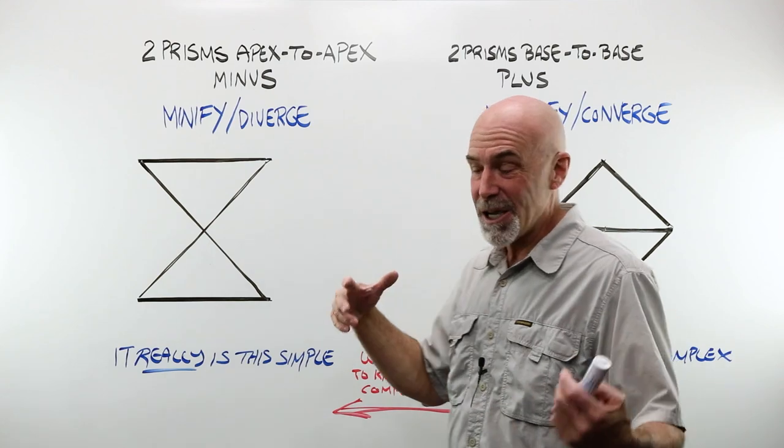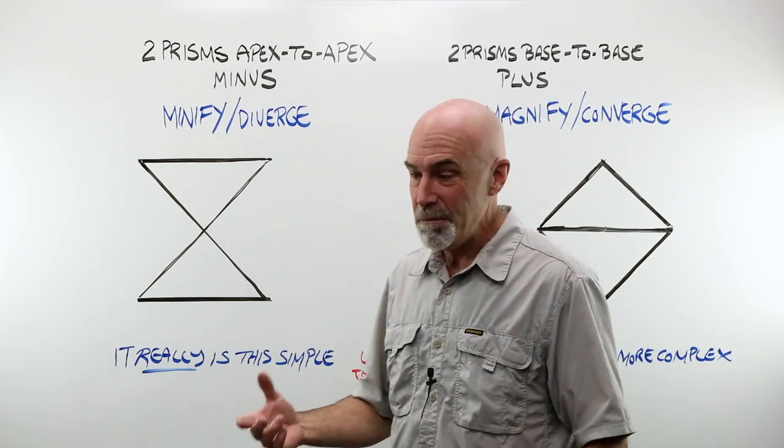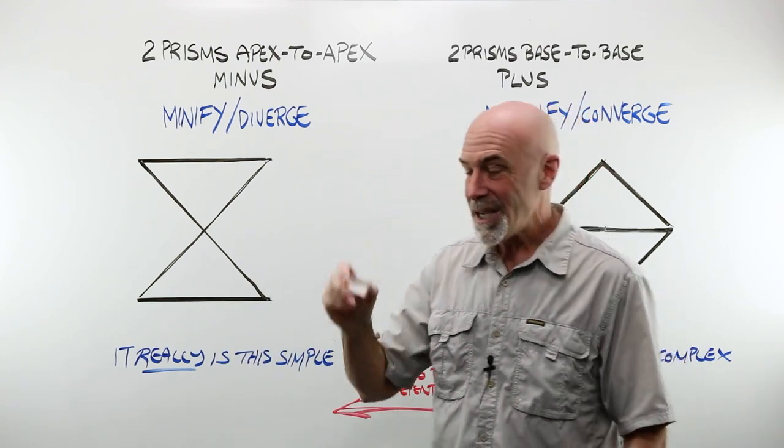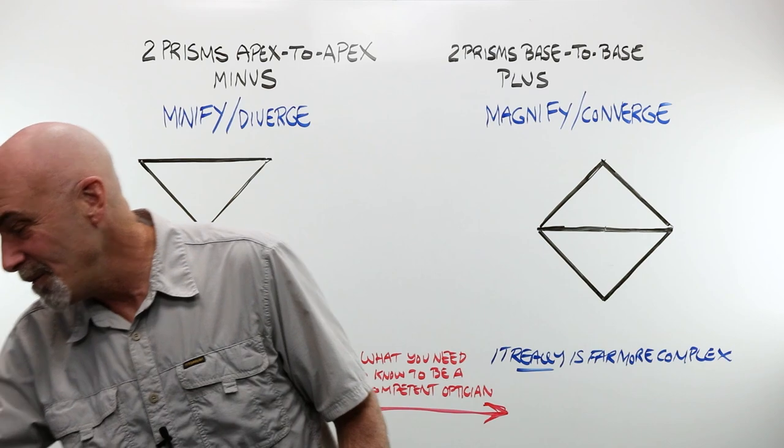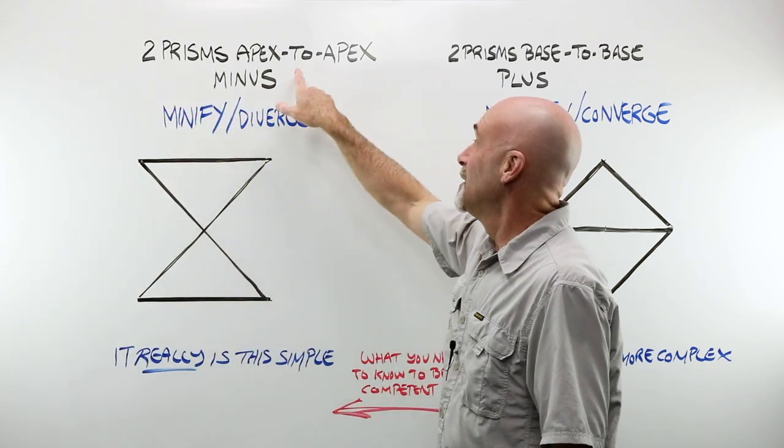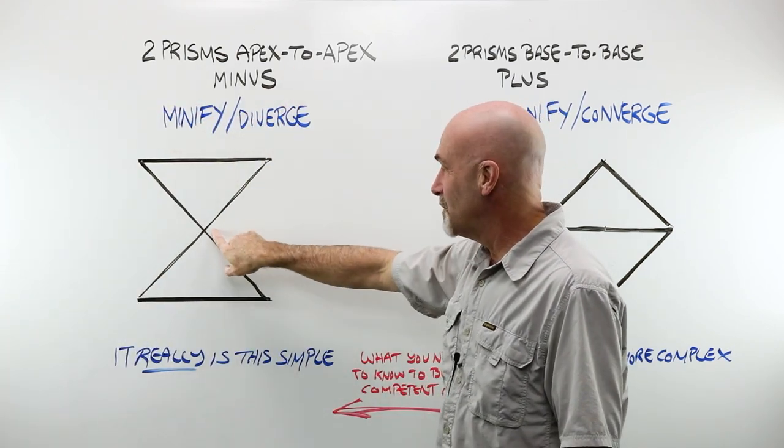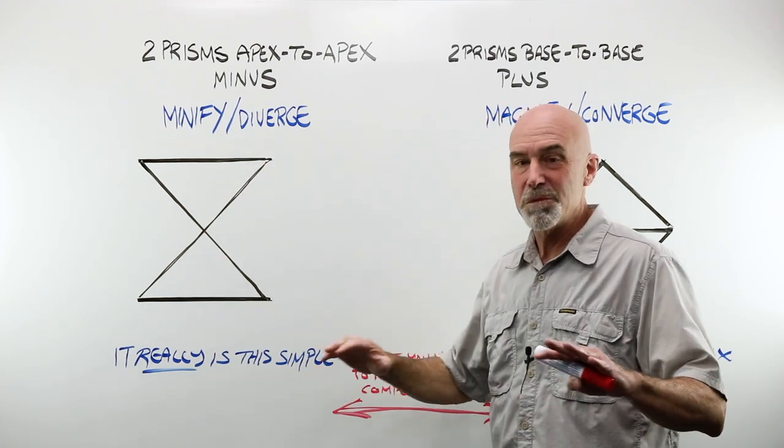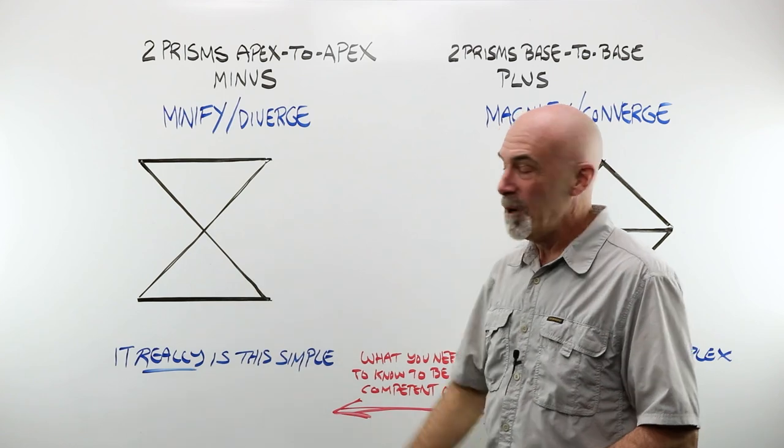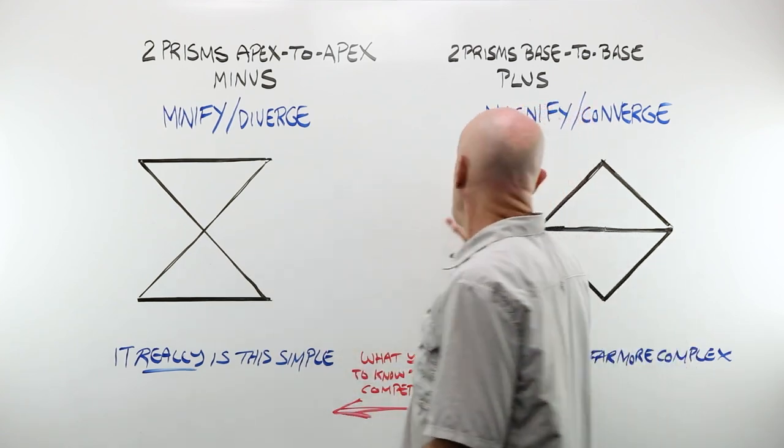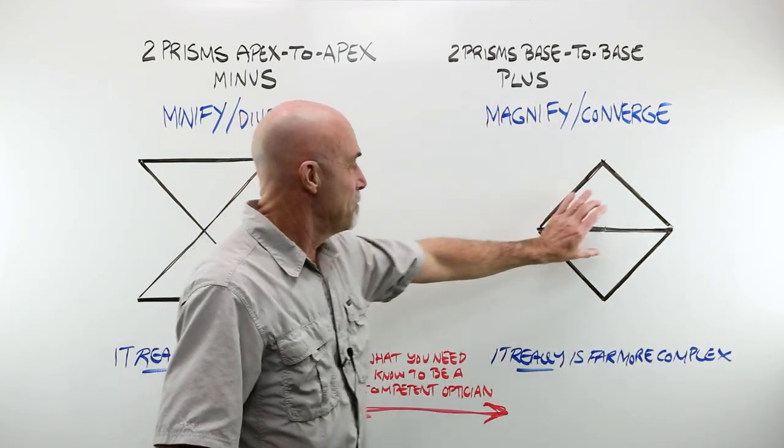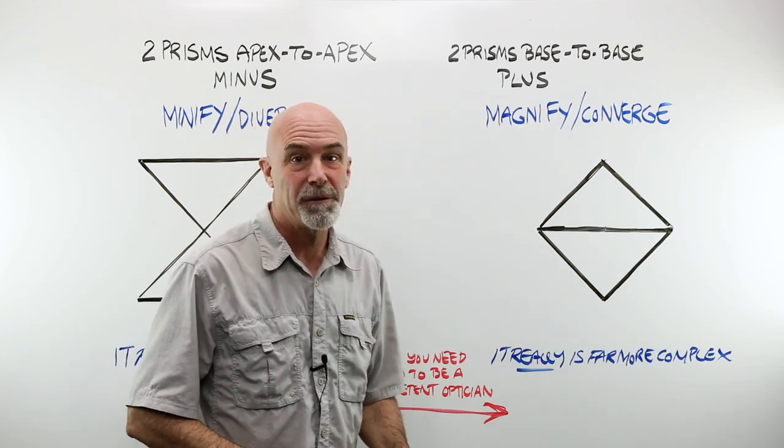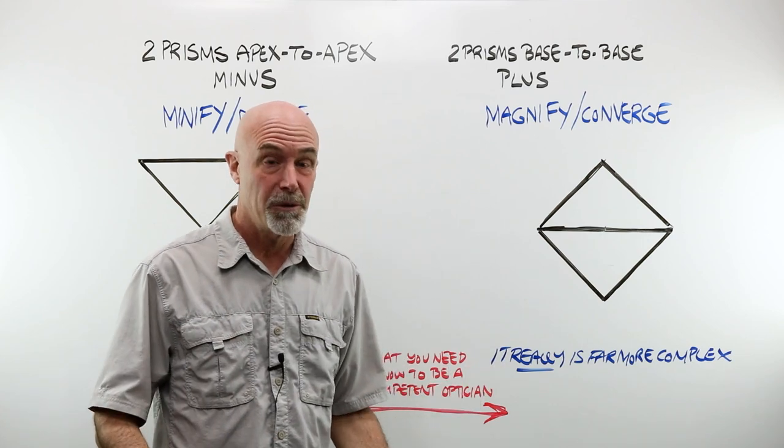If I take one simple prism and I stack it together with another one, two prism apex to apex, I create in the simplest terms possible, a minus lens. If I take two prisms and I put them base to base, I create a plus lens in the simplest terms possible.